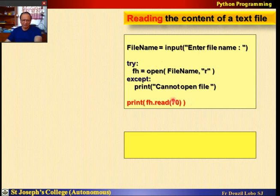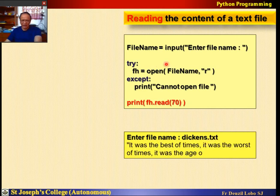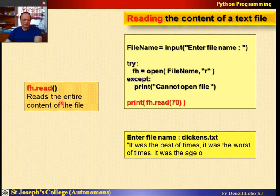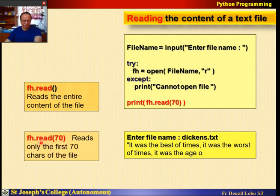Instead of reading the complete file, if you want to read only 70 characters, use fh.read(70). You enter the file name, it opens the file for reading and prints only 70 characters. If you give no number, it prints the complete text. If you give a number, it prints only that many characters from the file. So fh.read() reads the entire content, and fh.read(70) reads only 70 characters.